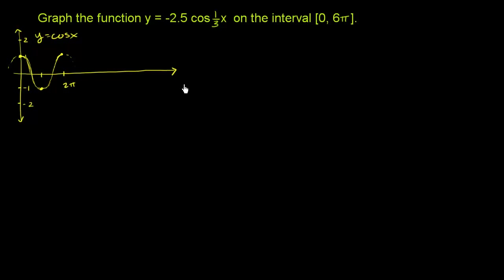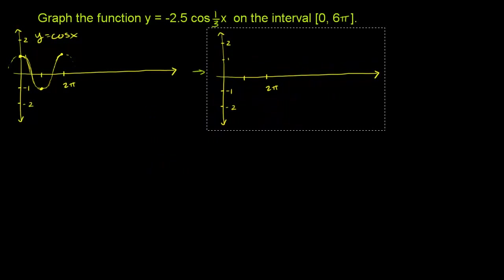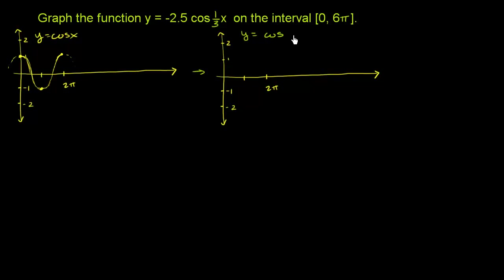Now I want to think about what happens to this graph instead of graphing y equals cosine of x - I'm going to draw y is equal to cosine of 1 third x. I'll do it over the entire interval between 0 and 6 pi. So let me mark 3 pi, 4 pi, 5 pi, and 6 pi.